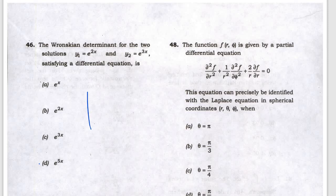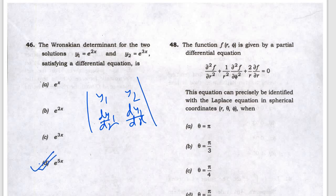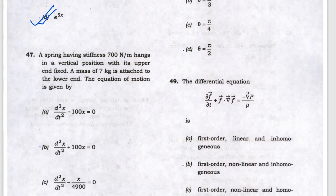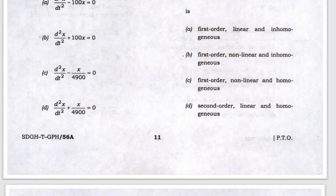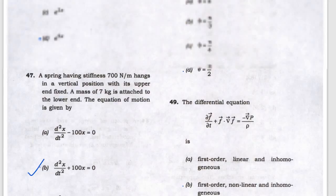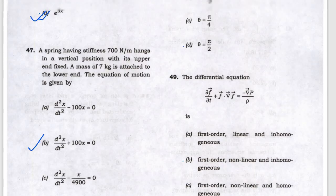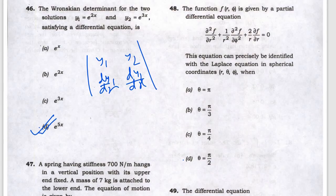The Wronskian determinant is: y₁, y₂ in the top row and dy₁/dx, dy₂/dx in the bottom row — working that out gives answer D. Next, the spring equation of motion — B will be the answer.